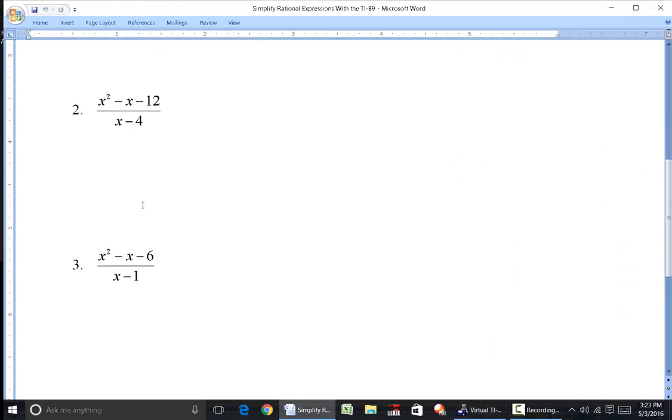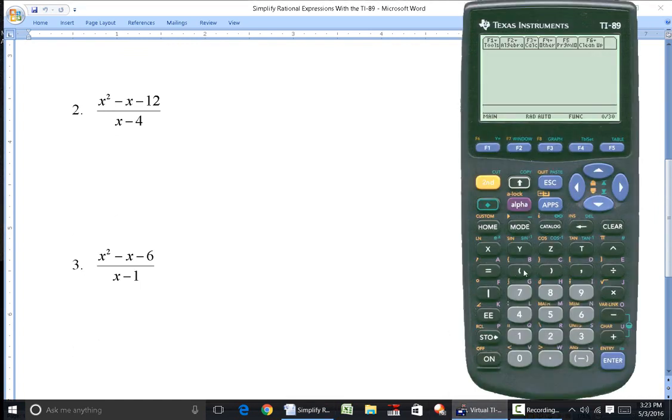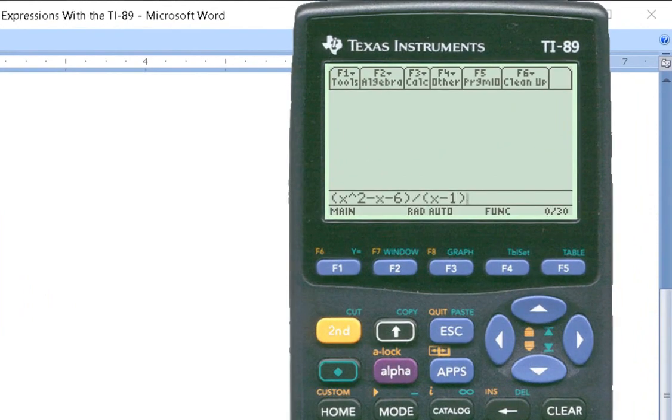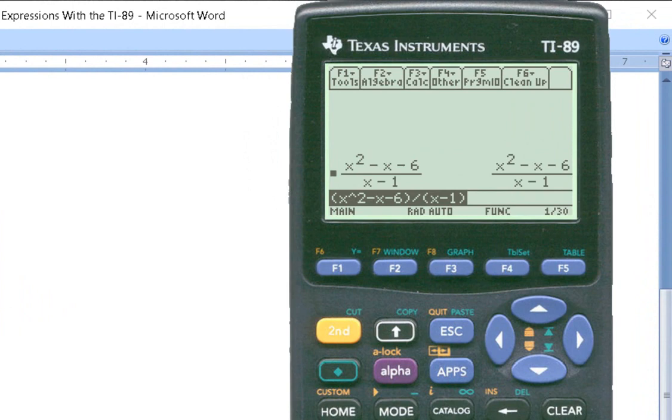Again, this one looks like number 2. So let's again go ahead and just write this in indicated division. So x to the second minus x minus 6, divided by x minus 1, and hit enter. Notice this one, it doesn't do anything to it. It gives me the same thing back, x squared minus x minus 6 over x minus 1.